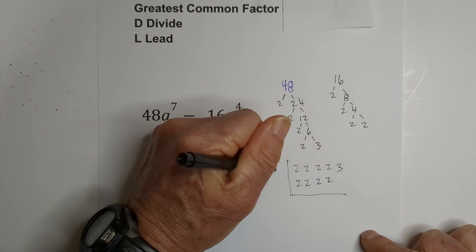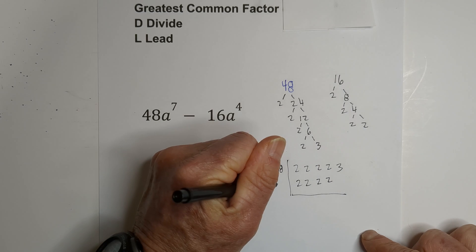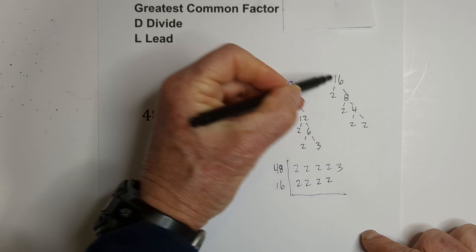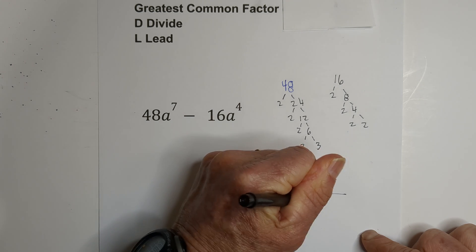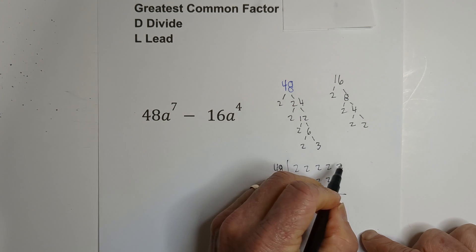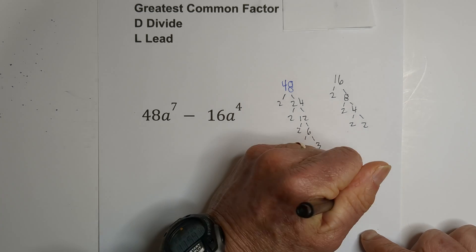I wrote the prime numbers in this box. The rule is, if there's two in a column, you bring it down. We do not bring the three down because there's not two in that column. When you multiply this, you get 16.